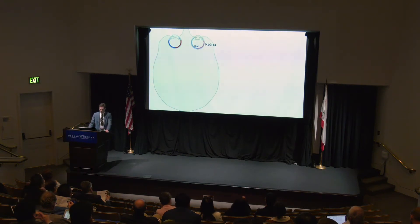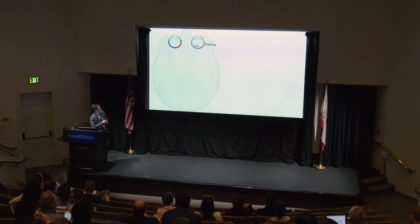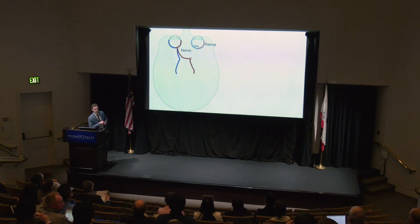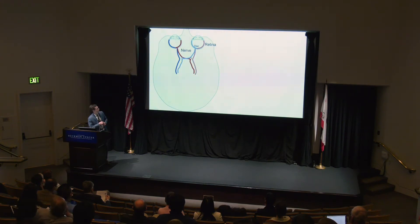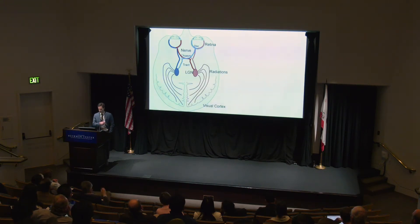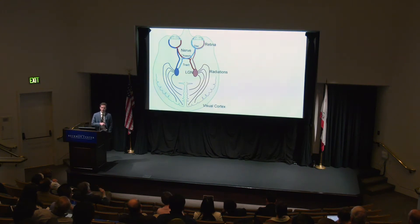Visual processing occurs as light enters the eye and hits the retina. It then goes along the optic nerve, which divides to both hemispheres of the brain. Both eyes have an optic nerve, and they cross over and synapse in the lateral geniculate nucleus, go through the radiations, and back to the visual cortex. This whole circuit is relevant for how we process vision, which includes color.